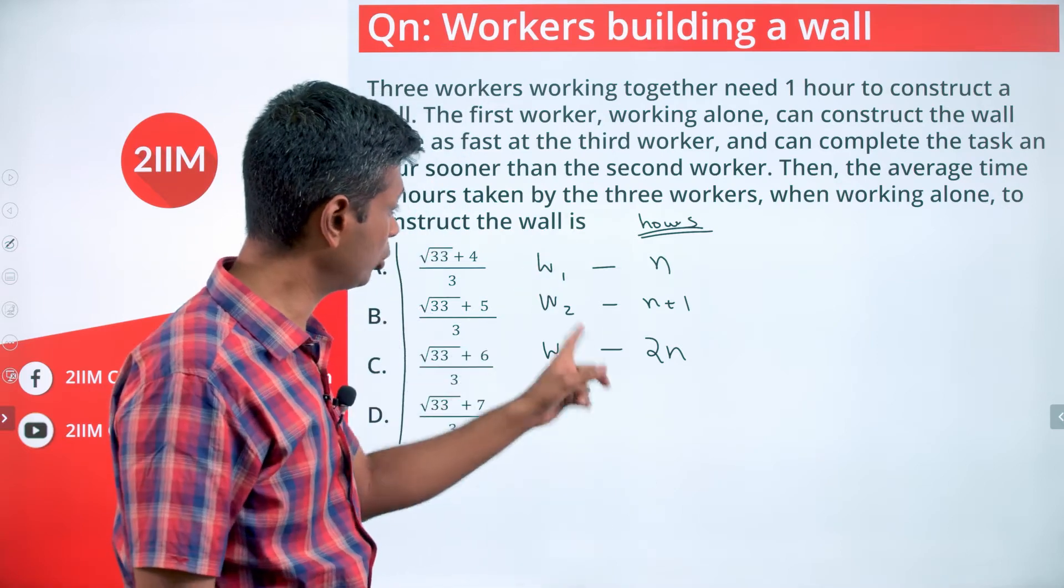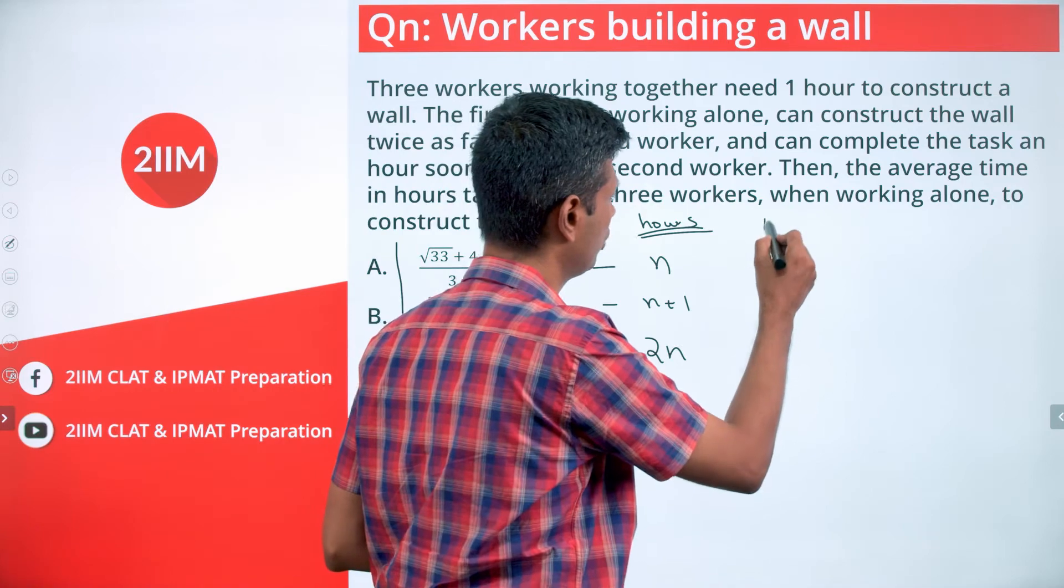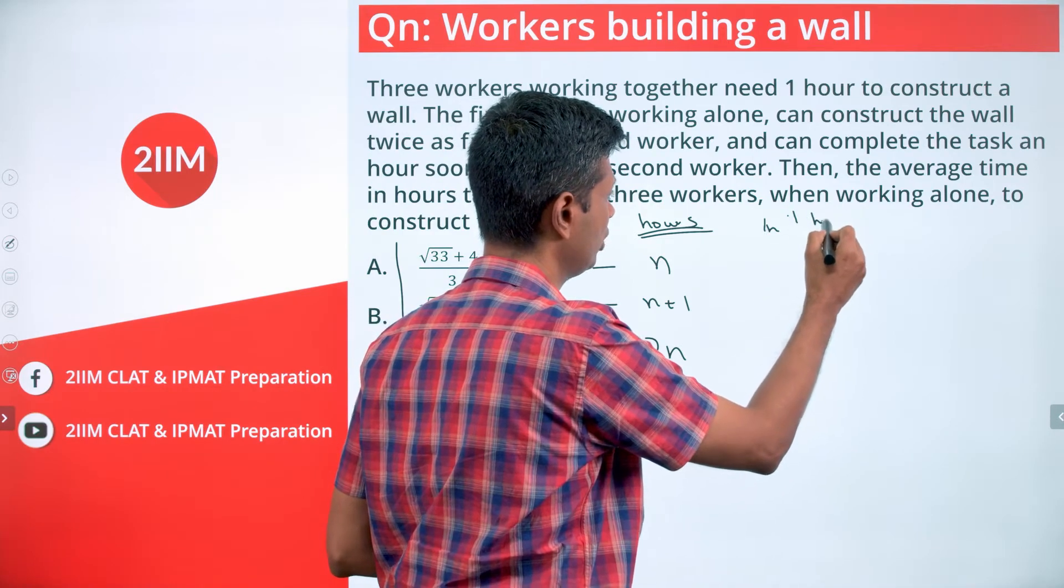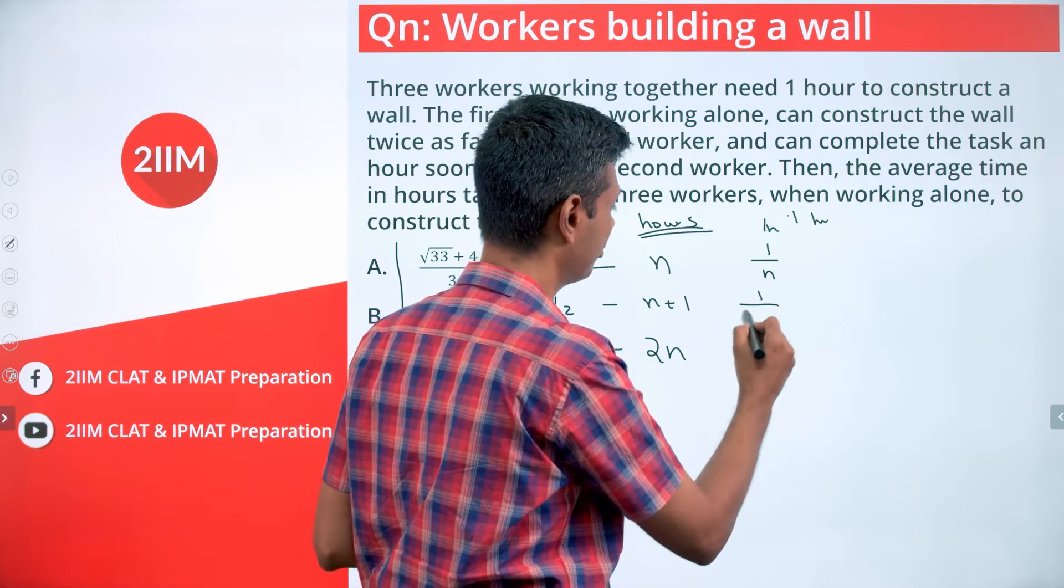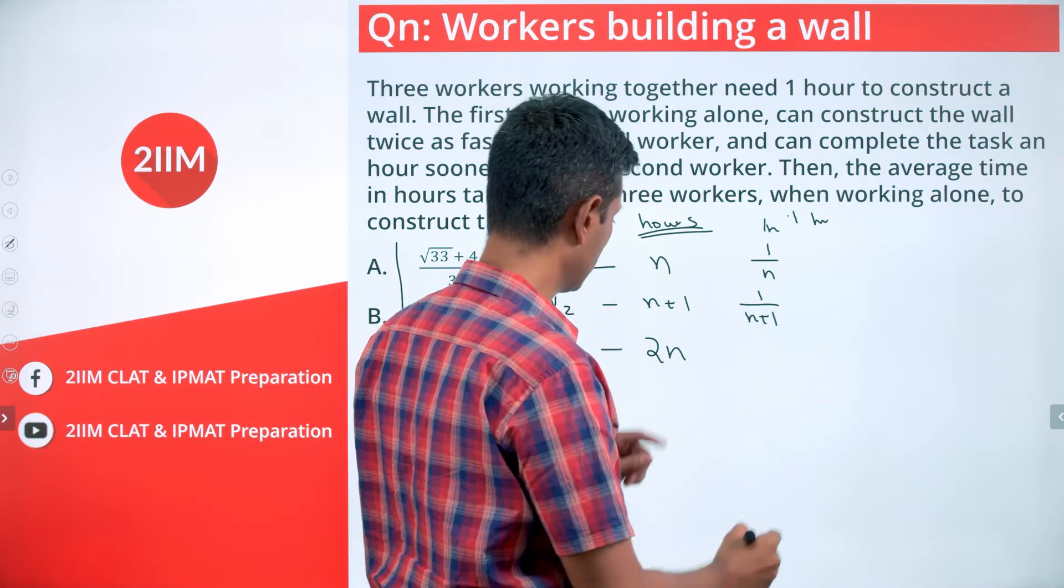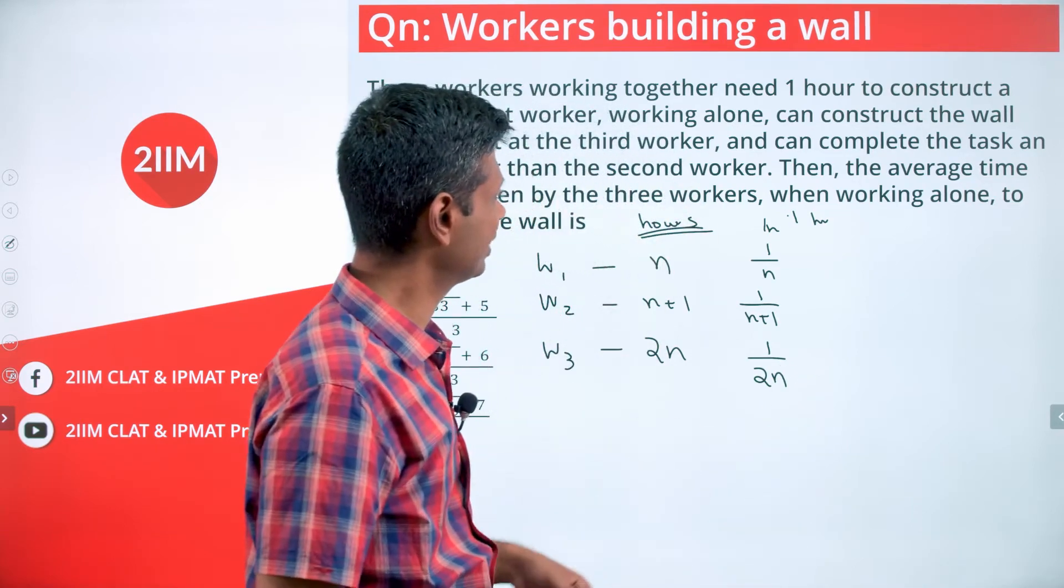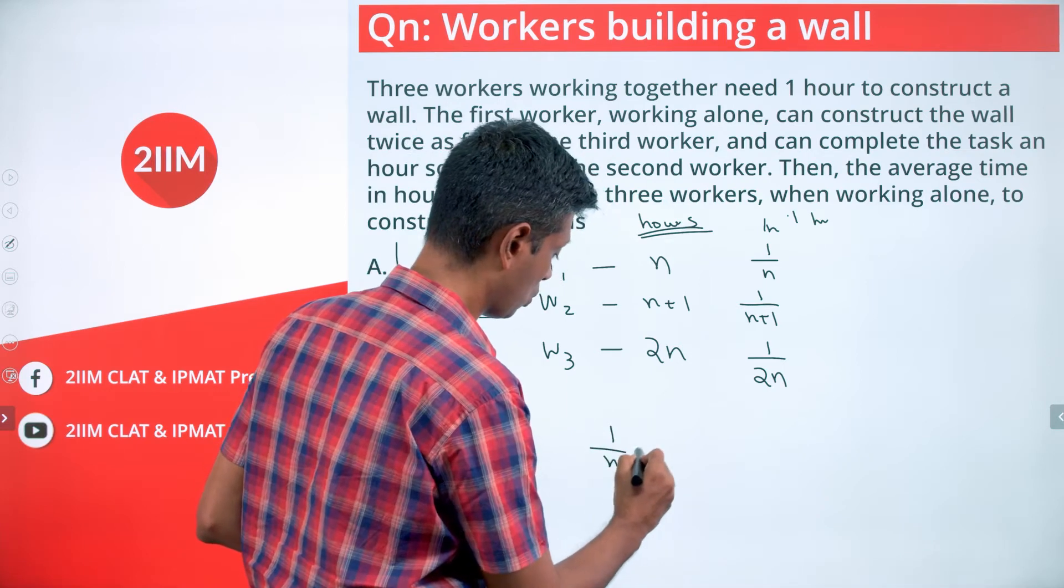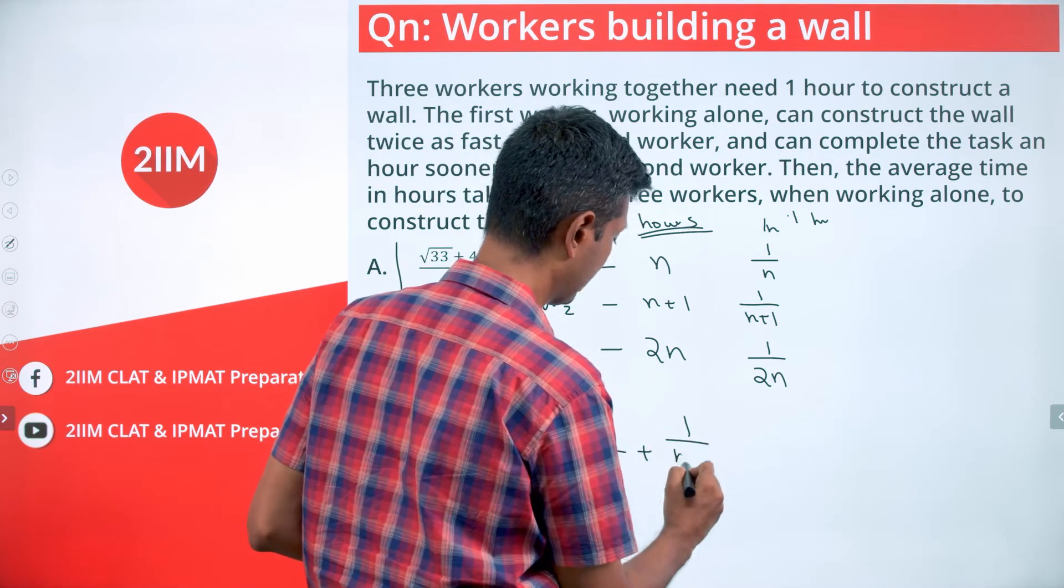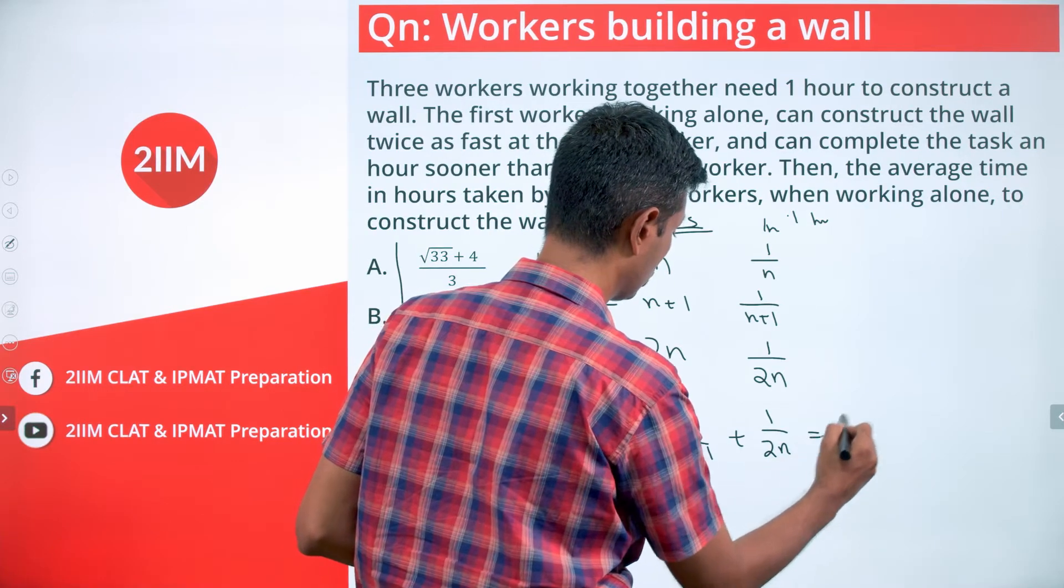We know that all three of them put together can complete this in one hour. And so what gets done in one hour: worker one will do 1/n of the task, worker two will do 1/(n+1) of the task, worker three will do 1/(2n) of the task. Between them, they complete the entire task, or we have this wonderful equation: 1/n + 1/(n+1) + 1/(2n) = 1.